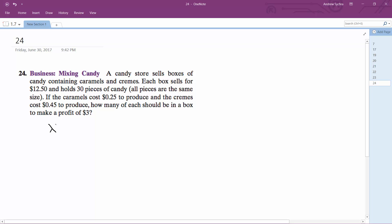Alright, so x plus y equals 30. So 0.25x will make this the caramels, and then 0.45. Actually, I'm going about it wrong.